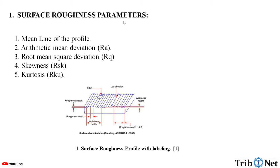What are the surface roughness parameters? The first one, mean line of the profile. Second one, arithmetic mean deviation, which is Ra. Third one, root mean square deviation, Rq. Fourth one, skewness, RSK. Fifth one, kurtosis, RKU.